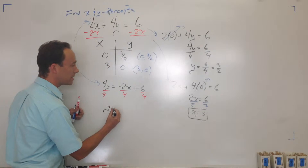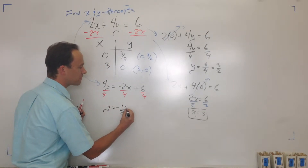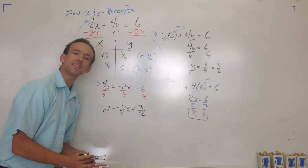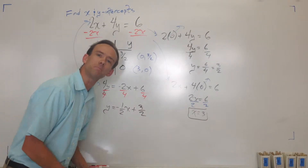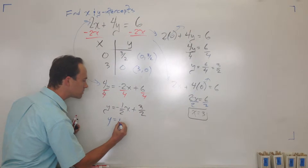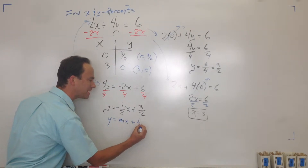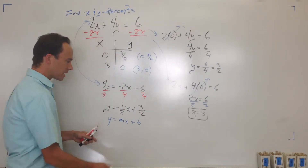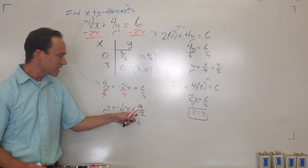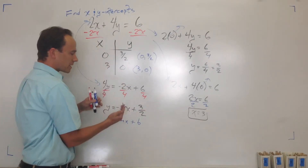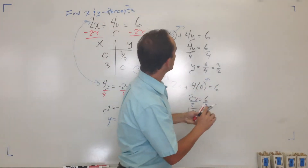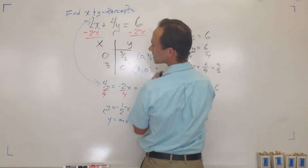Dividing everything by 4 gives me y equals negative 1/2 x plus 3/2. This is a function! This is just like y equals mx plus b — your slope is negative 1/2, and your y-intercept is 3/2.